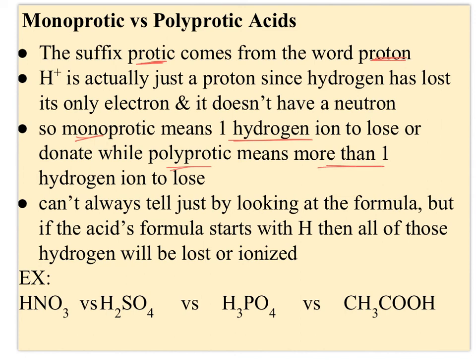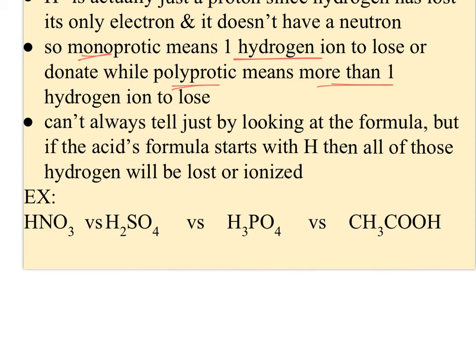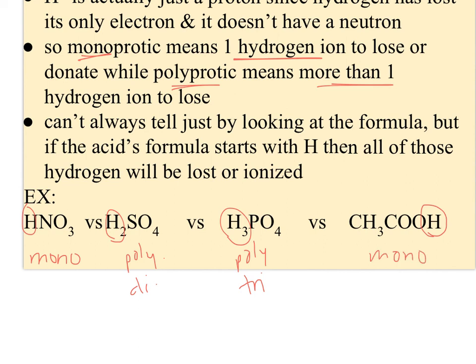You can't always tell just by looking at a formula whether an acid is monoprotic or polyprotic, but if the acid formula starts with H, all of those leading hydrogens will be lost or ionized. For example: HNO3 is monoprotic (loses one H); H2SO4 is diprotic/polyprotic (loses both H's); H3PO4 is triprotic (loses all three). CH3COOH is trickier — it's an organic acid and only that last H is lost, so it's monoprotic.